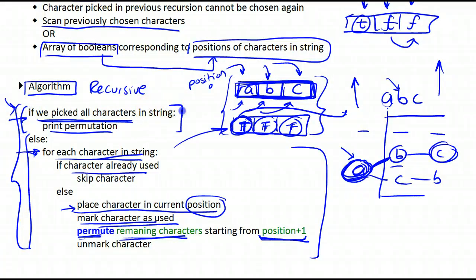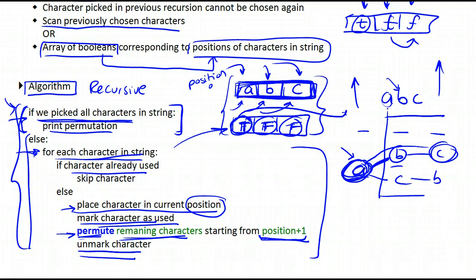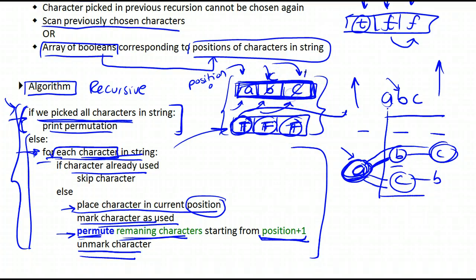The base case returns, and we start working our way back up through the recursive calls, unmarking characters — setting them back to false. It's as if we're working our way back through the tree. We unmark these as not being used anymore, and then continue to the next character in the for loop. So we pick C this time, mark it true, put C in the buffer, then place B, mark it true, and print it out. This algorithm allows us to cover all the cases.